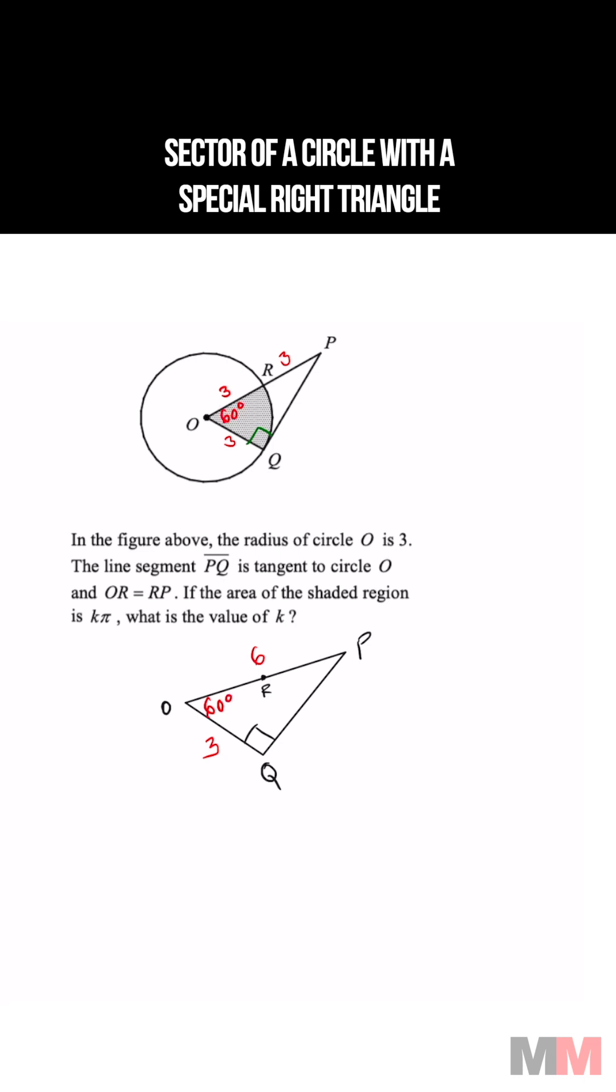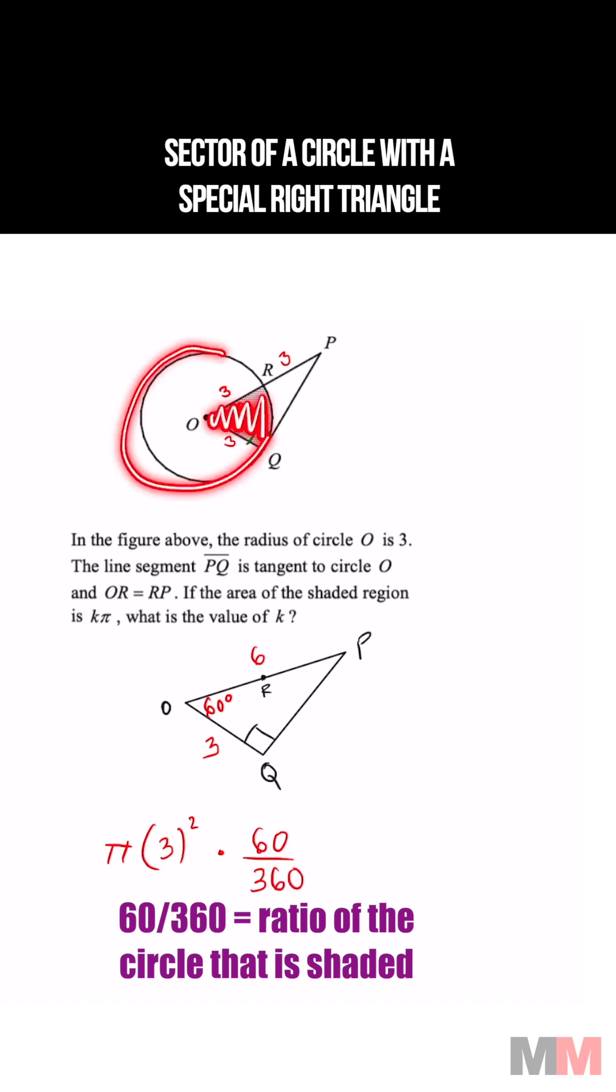First, we're going to find the area of the whole circle and that is just going to be pi times radius squared. We're going to multiply that to 60 over 360, the portion of the entire circle.